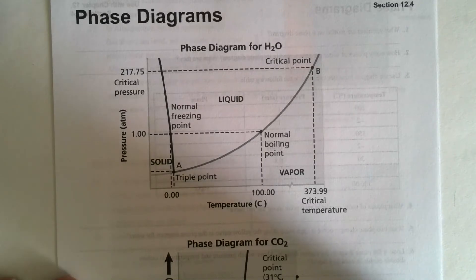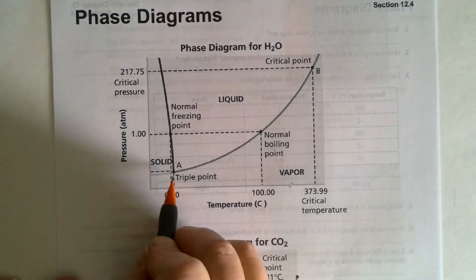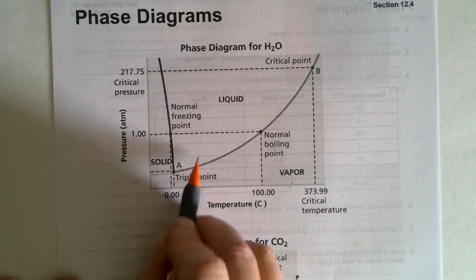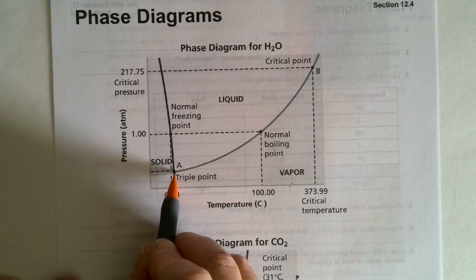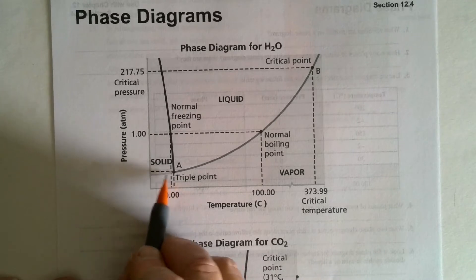Now, there are points along here that we need to take note of. Number one point is the triple point. This is when all three phases exist at the same time. So at this particular temperature, which looks like about maybe four degrees, and at this particular atmospheric pressure, which is probably somewhere pretty low,